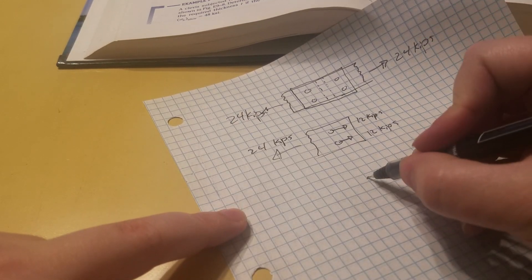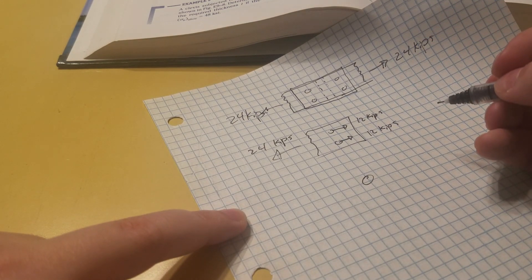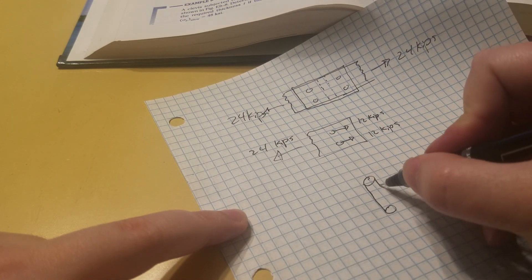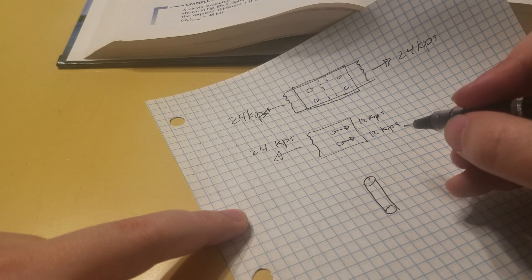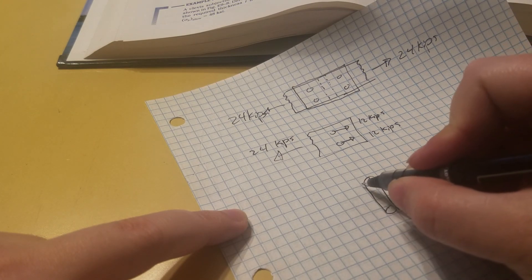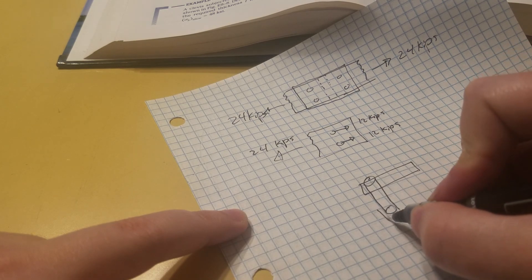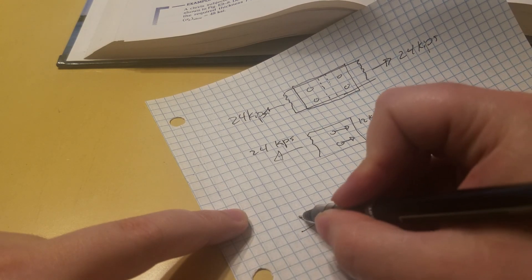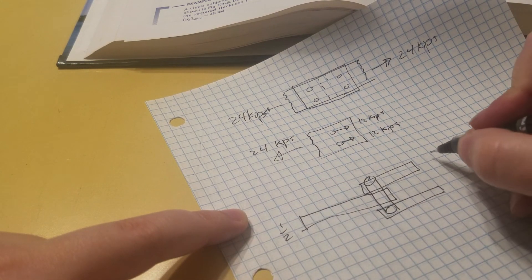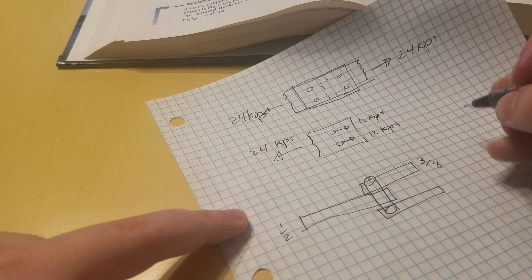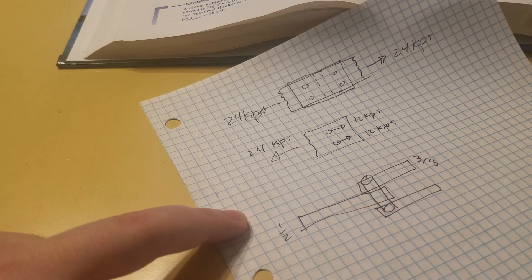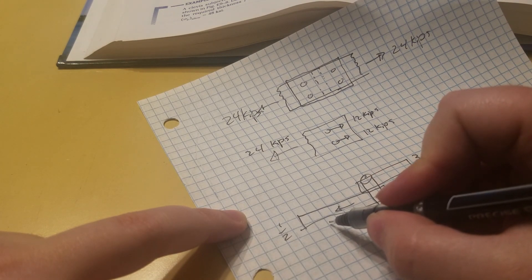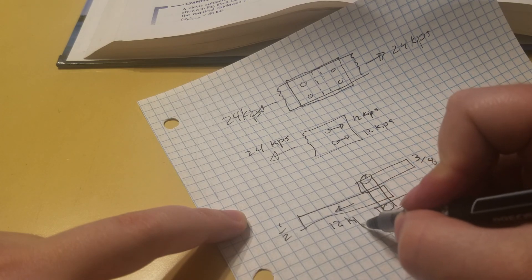So that means each bolt is experiencing one bolt. Let's see, we have a top plate, bottom plate, and then a middle plate here. So this one's a half inch, three eighths inch. And so this is coming out 12 kips for the one bolt.